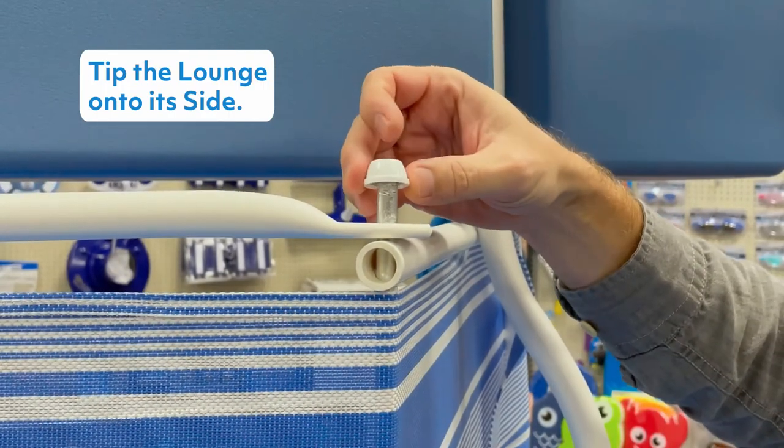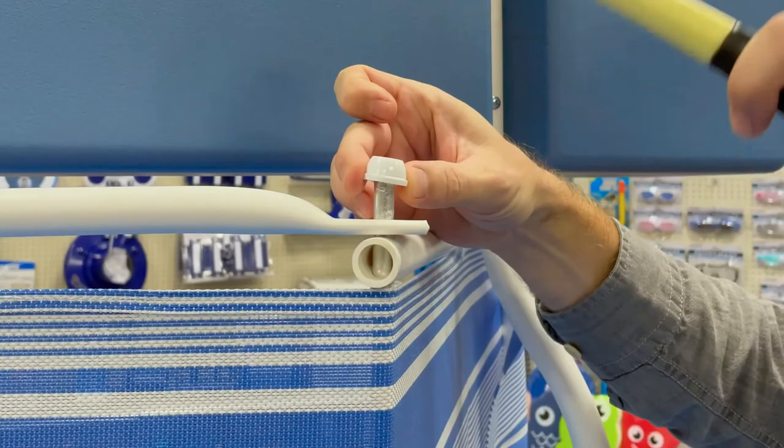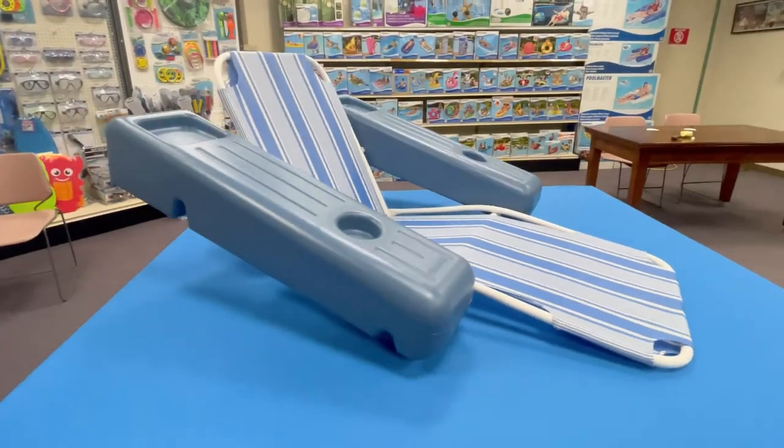Using a rubber mallet, tap the hubcaps into place on both ends of the aluminum rod. You are now ready to enjoy your Caribbean floating lounge.